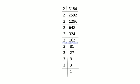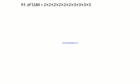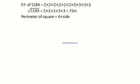The prime factorization of 5184 is 2 × 2 × 2 × 2 × 2 × 2 × 3 × 3 × 3 × 3. Making pairs and taking one factor from each, then multiplying: 2 × 2 × 2 × 3 × 3 = 72 meters. So the side of the square field is 72 m. The perimeter of the square is 4 × 72 = 288 meters.